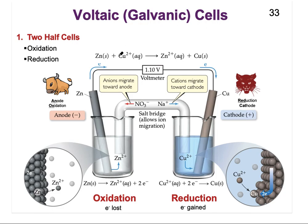The complete redox reaction can be separated into oxidation and reduction half equations. In the oxidation half, zinc is converted to zinc 2+, with two electrons on the product side — we are losing electrons. In the reduction half, copper ions 2+ are converted to copper solid, with two electrons added to the reactant side. Because the electrons are on the reactant side, this is a reduction — we are gaining electrons. Those are the two half cells.